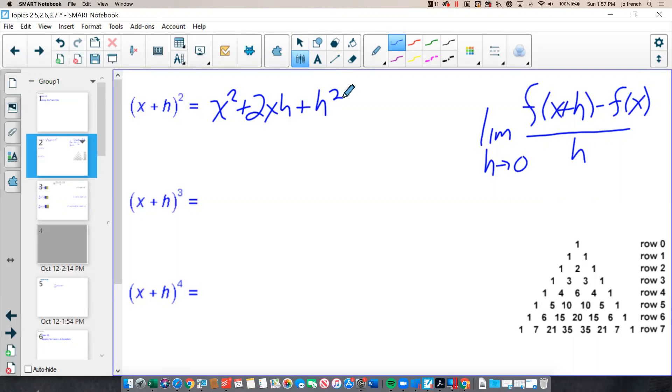x plus h cubed is a little trickier. But it turns out that these expansions, squared, cubed, to the fourth, the exponents on these expansions match Pascal's triangle. Notice how in our first expansion, my coefficients were 1, 2, and 1, which matches row 2 of Pascal's triangle.